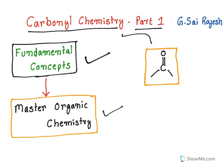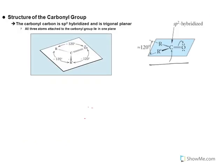This is what a carbonyl functional group is — a carbon bonded with oxygen with a double bond. When you see the structure of the carbonyl group, it is sp2 hybridized and it is a trigonal planar molecule. Now we will see all these terms in detail.